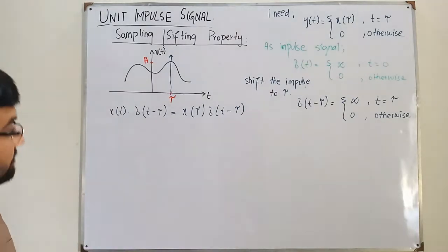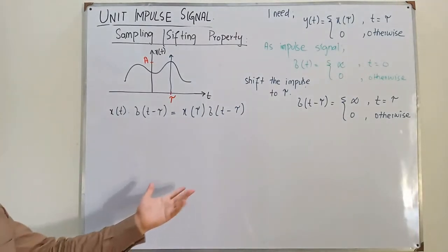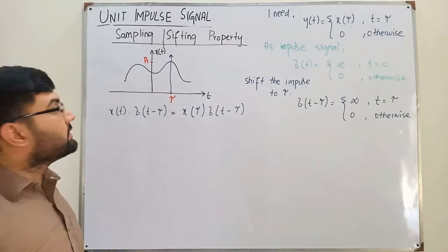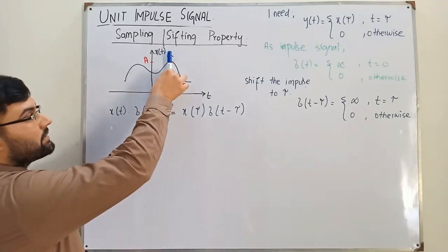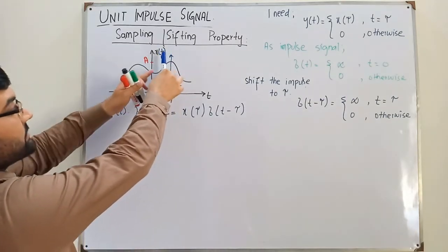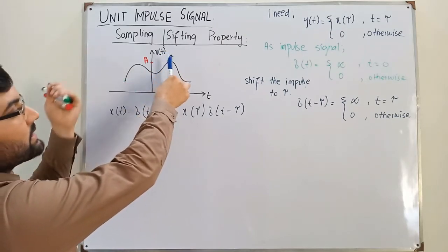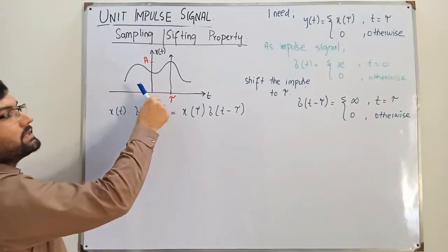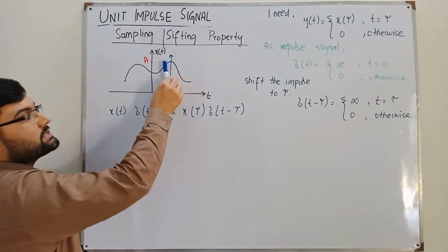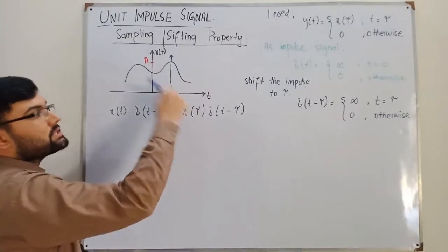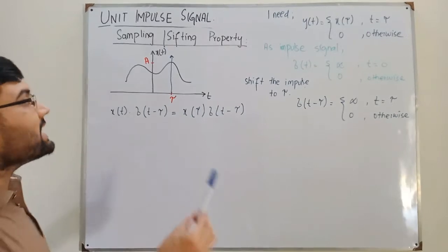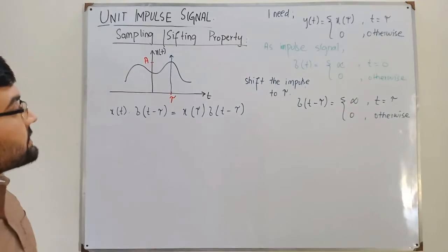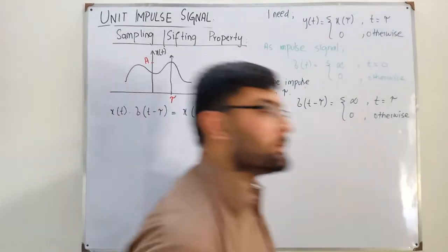Why do we write it like this? If you are multiplying two things, one thing is only present at tau and the other is zero elsewhere. So to the left of tau the impulse is zero, and to the right of tau the impulse is also zero. The only value you get is at t equals tau, so you multiply with x of tau instead of x of t.